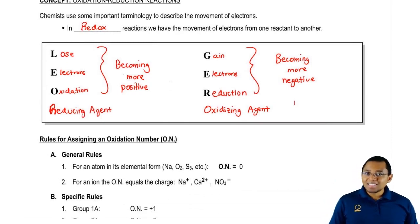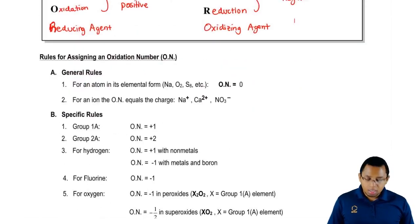Now that we know the distinction between oxidation and reduction, it's important to set down some ground rules to help us figure out the particular oxidation state of a particular element. I break rules for assigning oxidation numbers, which we're going to abbreviate ON, into two sets of rules.